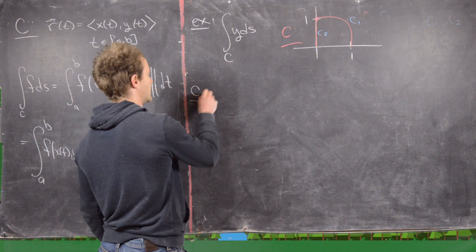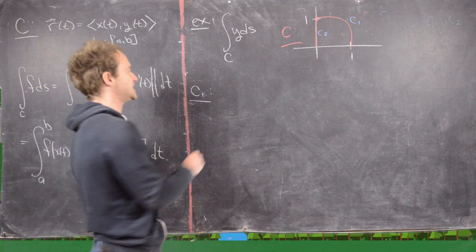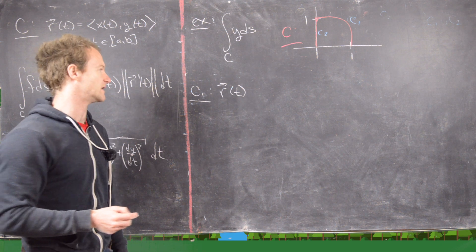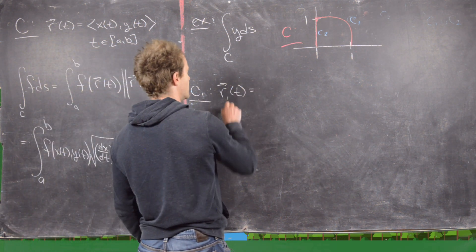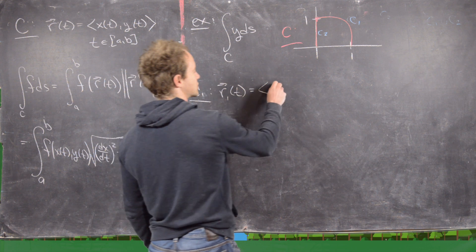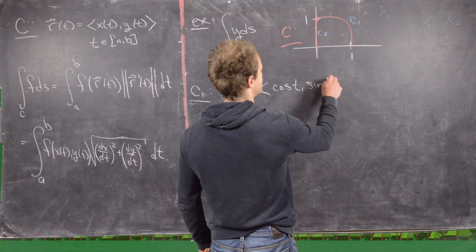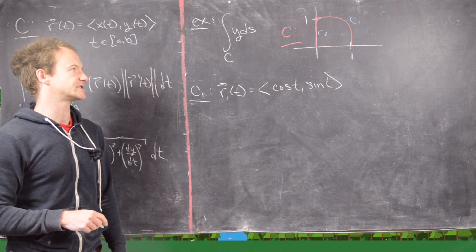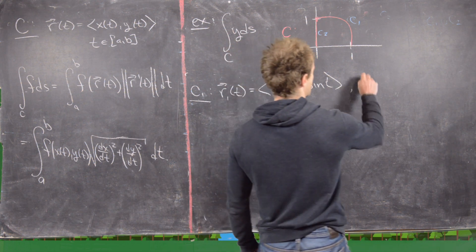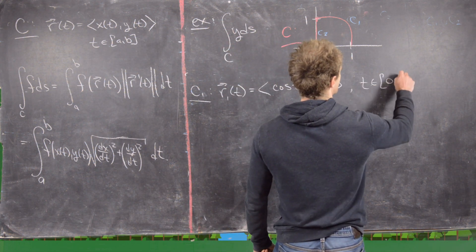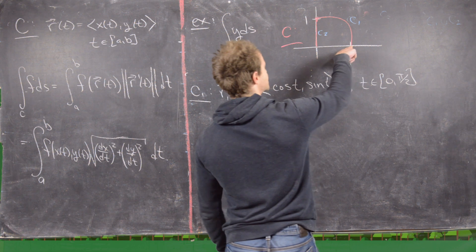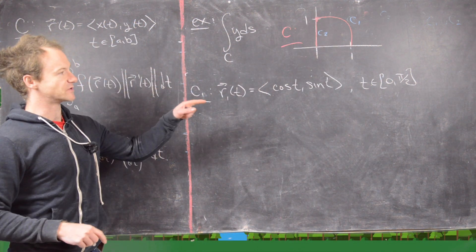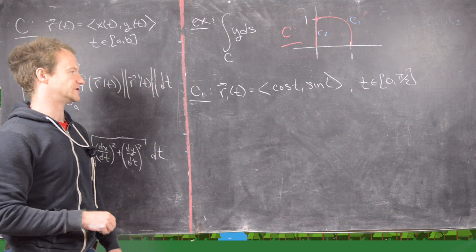Let's parametrize these. C1 is a unit circle, which can be parametrized by (cos t, sin t), with a coefficient of 1 in front because it's a unit circle with radius 1. I need t to go from 0 to π/2 because I'm going from the point on the positive x-axis to the point on the positive y-axis, representing angles 0 and π/2.